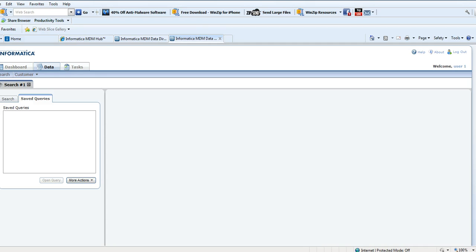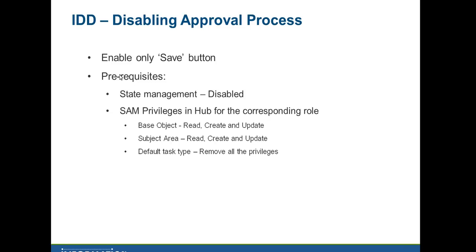Now let's see how to enable only the save button, which means disabling the approval process. In that case, the prerequisite is that state management must be disabled. However, in business scenarios where state management is required, the SAM privileges must be configured as follows: read, create, and update privileges for the base object; read, create, and update privileges for the subject area; and all privileges for the default task type must be removed. With these SAM privileges, the save button will be enabled even if state management is enabled.